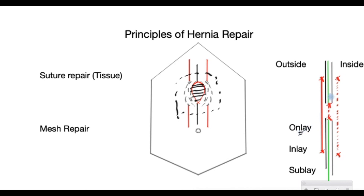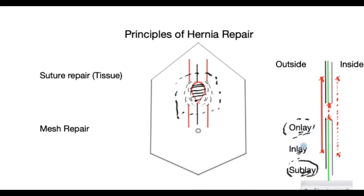Alternatively, the mesh can be placed deep inside the abdominal wall, usually with another cover protecting it from the abdominal contents — this is called the sublay technique. In general, results are better with the sublay technique for incisional hernias, but the onlay technique is deployed in other areas with just as much efficiency. The choice depends on the type and location of the hernia as well as the surgeon's preference.